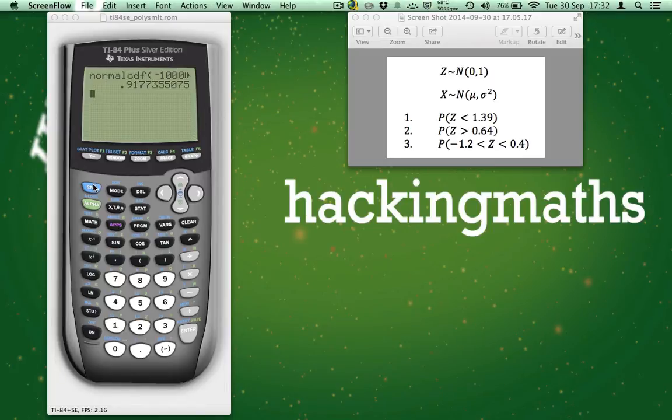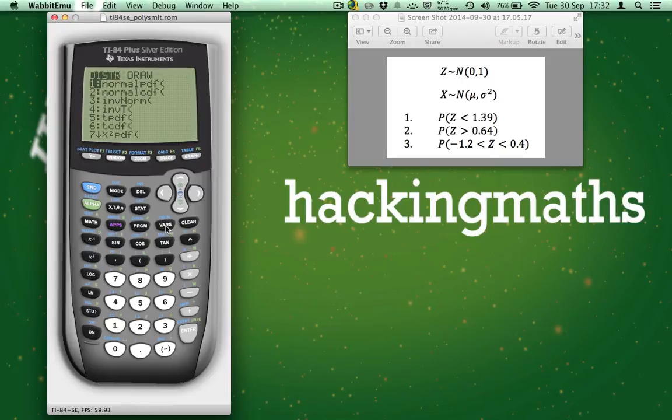Press 2nd, and press Vars, taking us to our distribution menu. Then, scroll down to NormalCDF, press Enter. We enter our lower bound of 0.64, our upper bound of 100 million, and then leave our mu as 0, and our standard deviation is 1. Make sure Paste is highlighted, then press Enter twice.